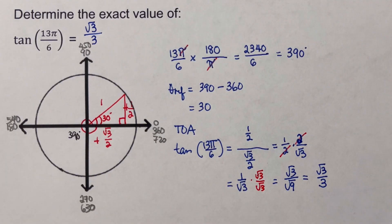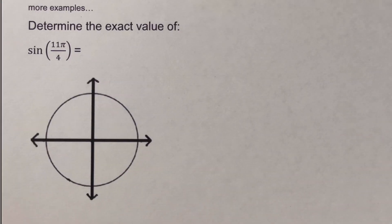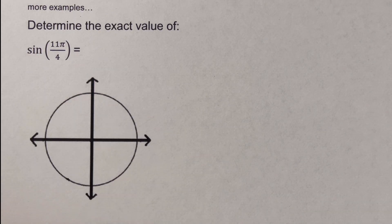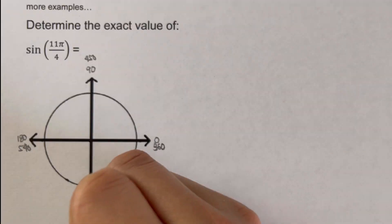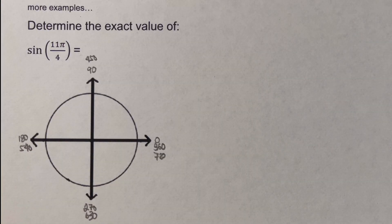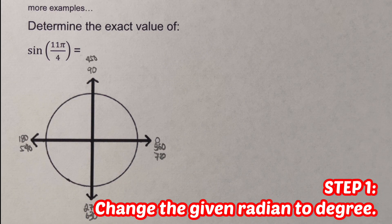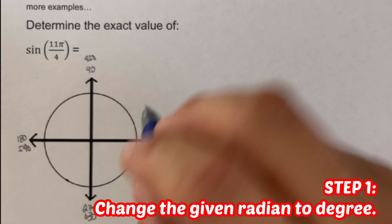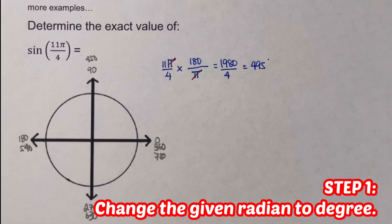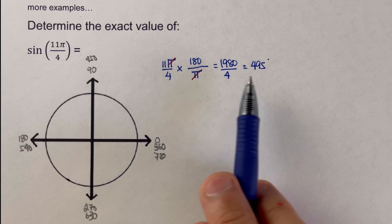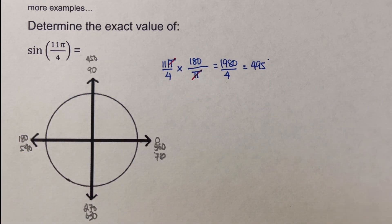Now let's move on to the next example. We are supposed to determine the exact value of sine 11π/4. Let's label the angles first. The first step is to change the given radian to degrees — I'll show the work on the side. This angle 11π/4 is actually 495 degrees.